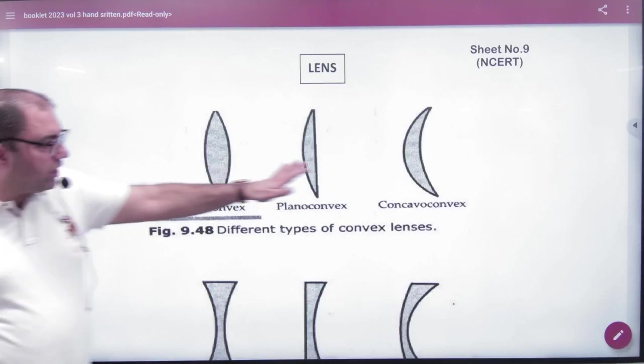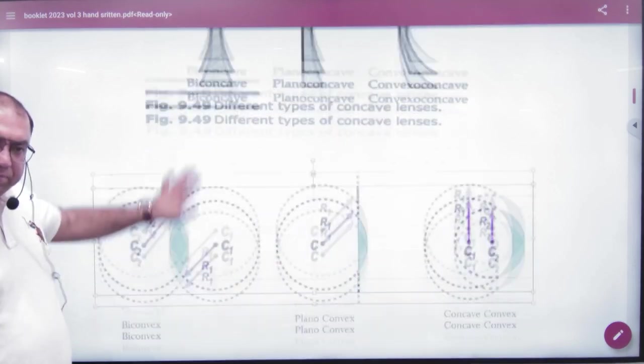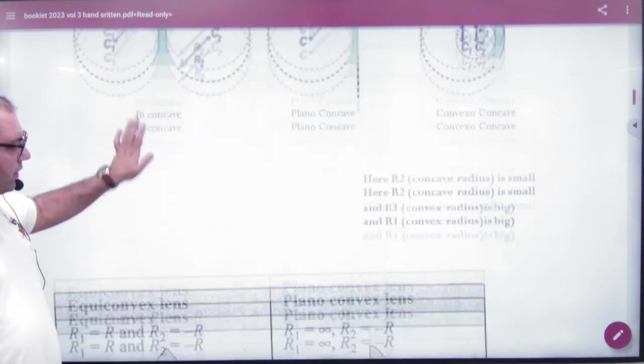So objective sheet, this sheet number 9 is handwritten. Lens category is already done. Last time I did lens categories.